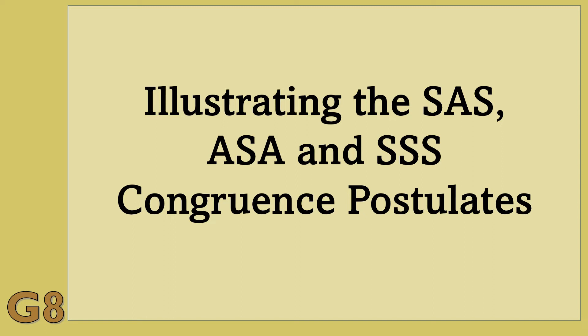There are ways to find or prove if two triangles are congruent through some congruence postulates like SAS, ASA, SSS, and AAS. SAS stands for Side-Angle-Side Congruence Postulate. ASA stands for Angle-Side-Angle Congruence Postulate. SSS stands for Side-Side-Side Congruence Postulate.